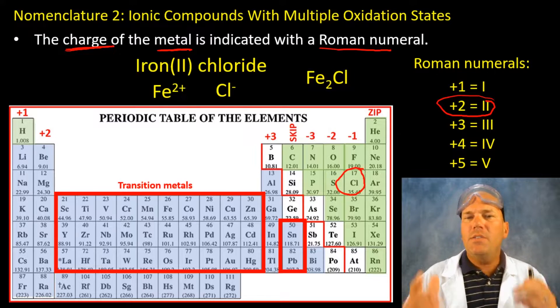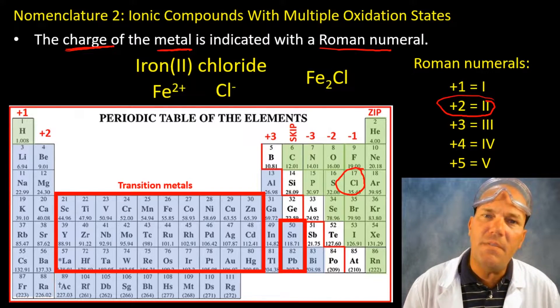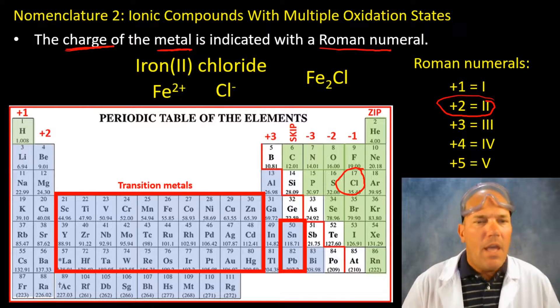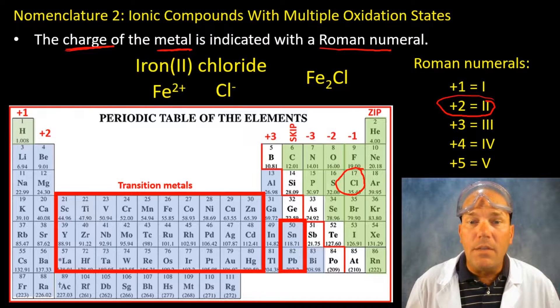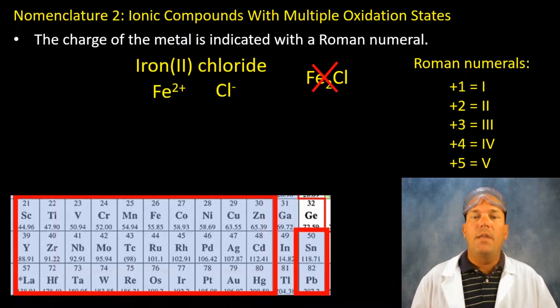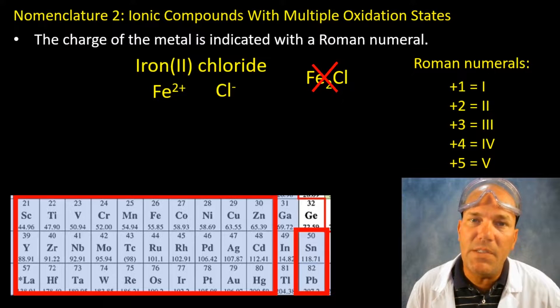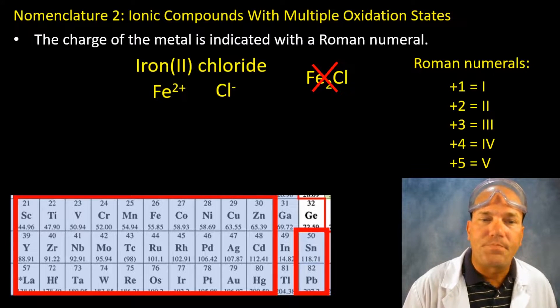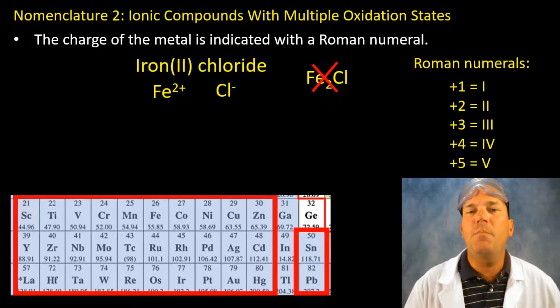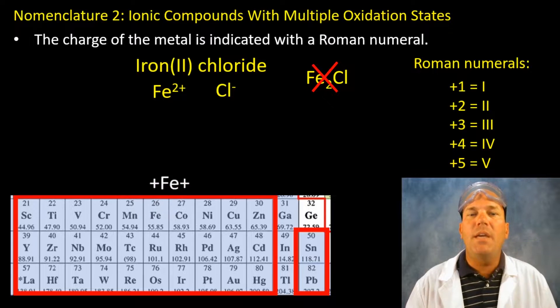So here is what is wrong. And this is what many of you will tend to do early on. Iron two chloride. Okay there's two irons and a chlorine. Wrong. That is incorrect and one of the most common misconceptions in this unit. Remember that the two is not referring to the number of atoms of the cation but rather the charge being a plus two.